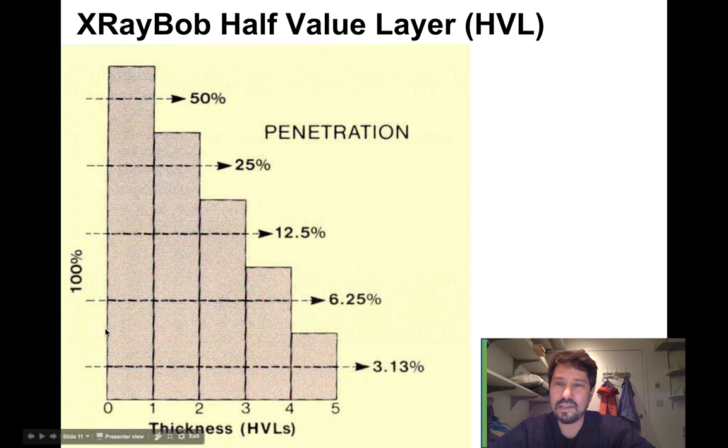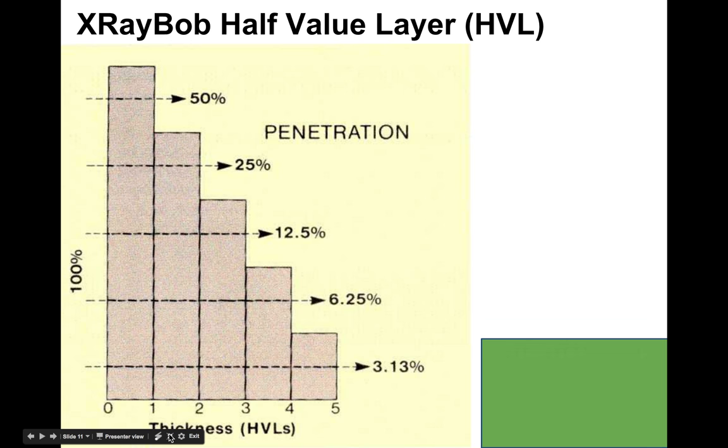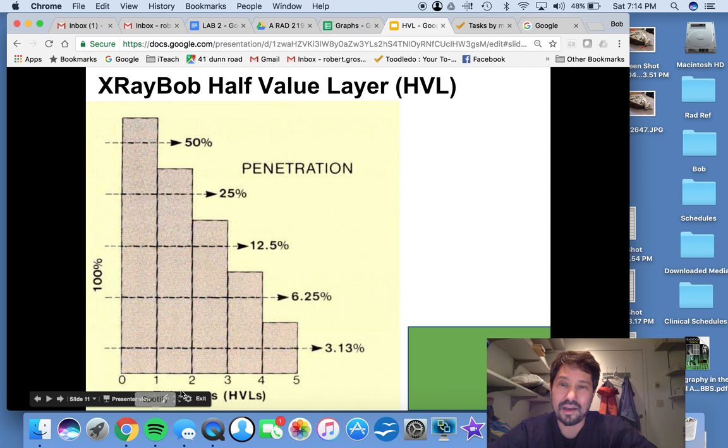Here we see one HVL would cut 50% of the beam. Another HVL would take that 50% and cut it in half to 25%. A third HVL would take it from 25% down to 12.5%. And you can see it goes on and on.